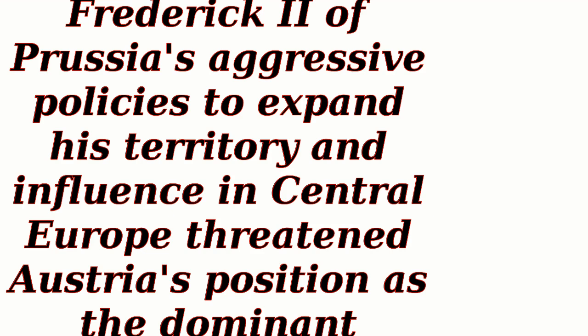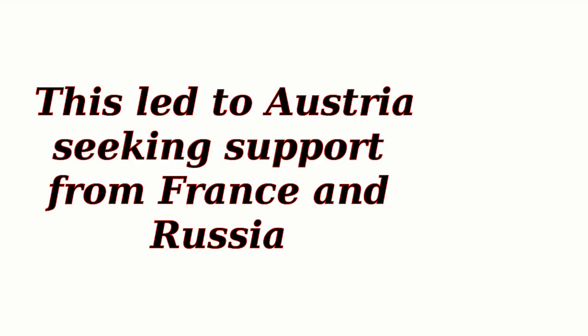Prussian expansion: Frederick II of Prussia's aggressive policies to expand his territory and influence in Central Europe threatened Austria's position as the dominant German power. This led to Austria seeking support from France and Russia.